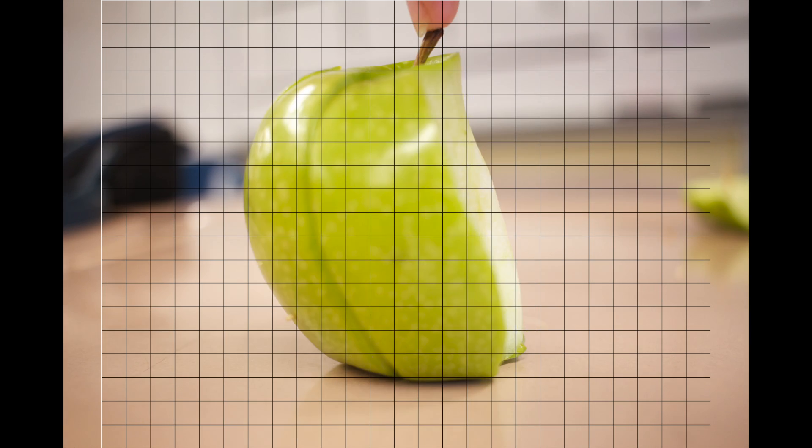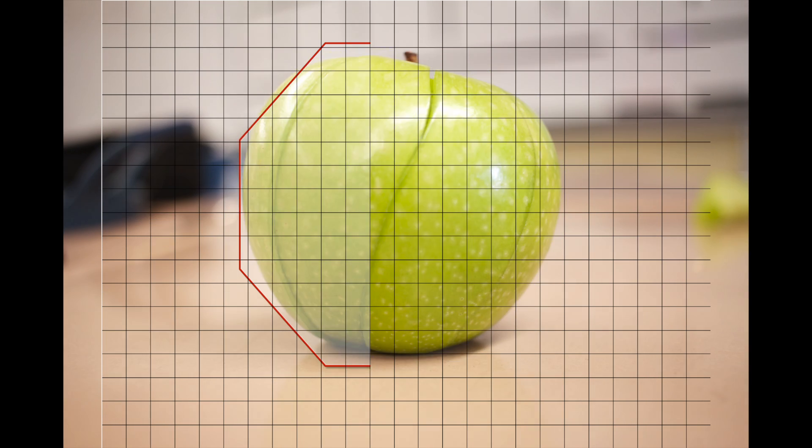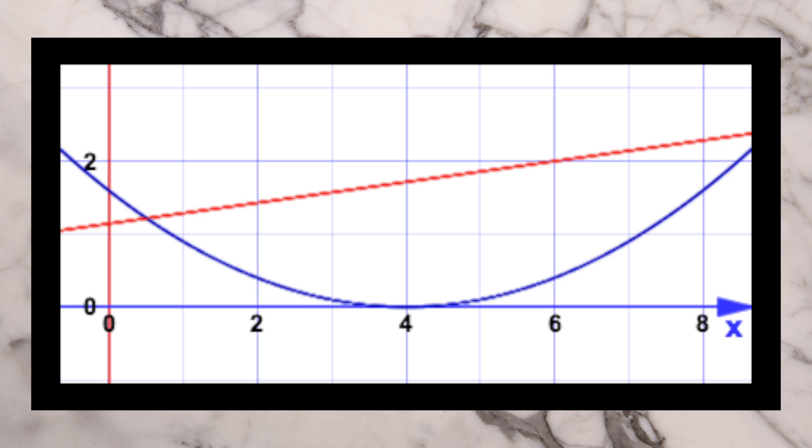So as we add slices to the apple, we notice another equation show up along the side. We could call this 0.1x squared. Once again, to make things easier on us.